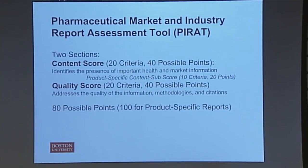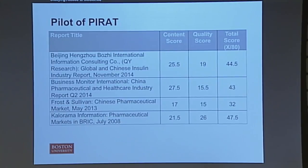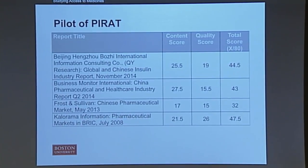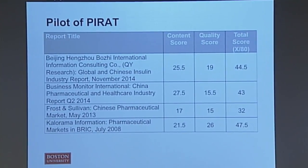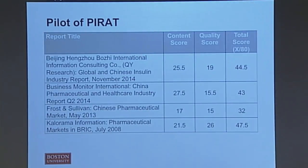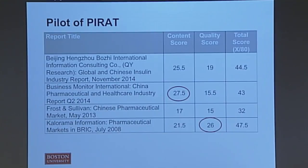So after we developed the final draft, we conducted a pilot study of the PIRATE using four different market reports. The first was purchased through funding from Kilchon Honors College. The middle two were accessed through databases available through Boston University. The final was accessed at Harvard Business School. The first two columns are both out of 40, and the final column is out of 80. Most importantly, Business Modern International's report had the highest content score — 27.5 out of a possible 40 — which is really not that great, less than 75% of the information. For quality, Colorama Information had the highest at 26 out of a possible 40. None of the others made even 50% of the possible points, which is very questionable when trying to base studies off this as even one part of your data sources. Colorama Information also had the highest total score at 47.5 out of a possible 80, which is still amazingly low.